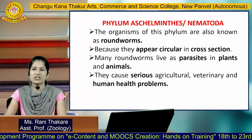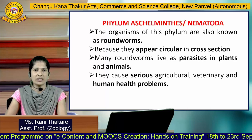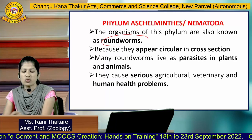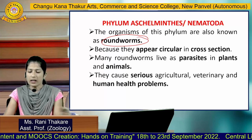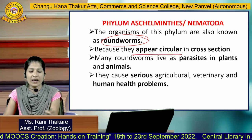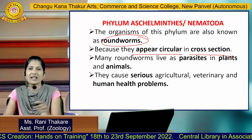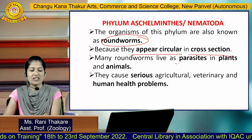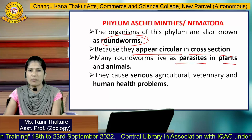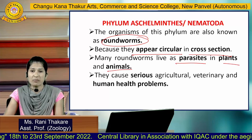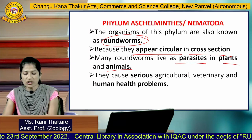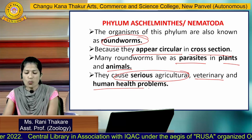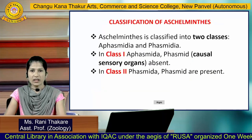Phylum Aschelminthes, also known as Nematoda. Organisms of this phylum are known as roundworms because they appear circular in cross-section. Many roundworms live as parasites in plants as well as in animals, and they cause serious agricultural, veterinary, and human health problems.